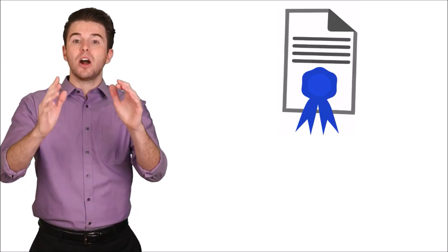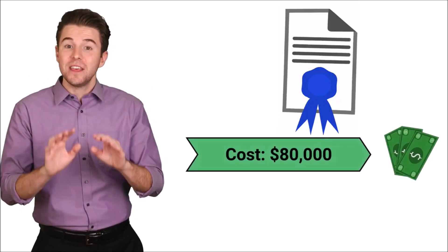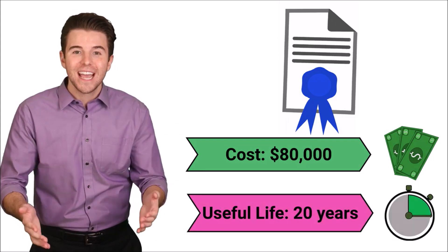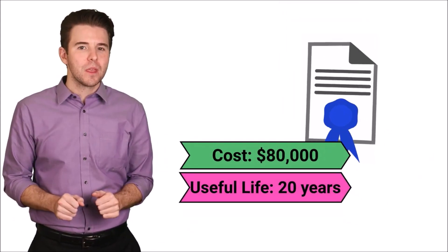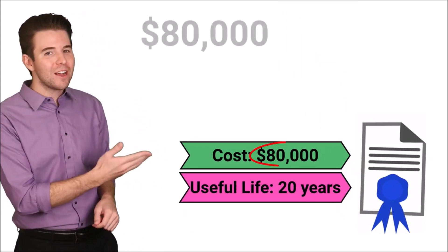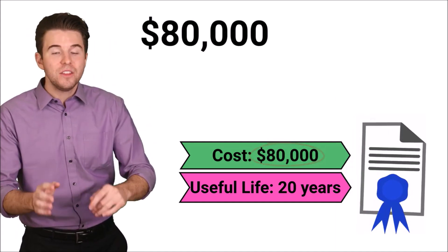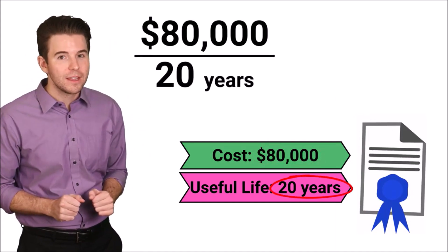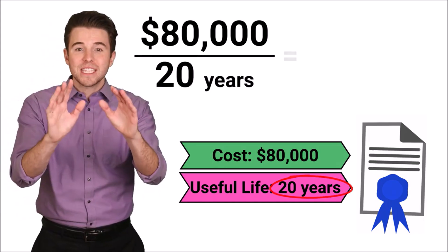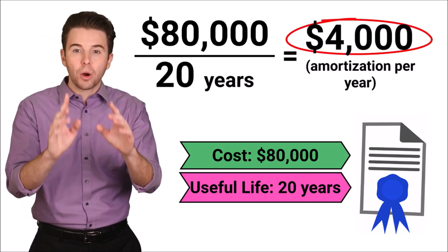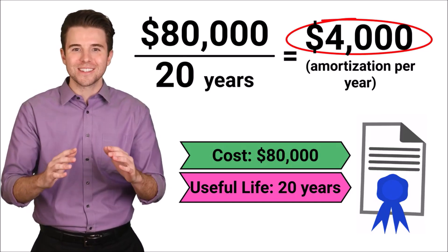Let's do an example with amortization expense. Assume we purchase a patent costing $80,000 that has a useful life of 20 years. To compute amortization, we take the $80,000 cost divided by the 20-year useful life. This gives us $4,000 of amortization per year for 20 years.